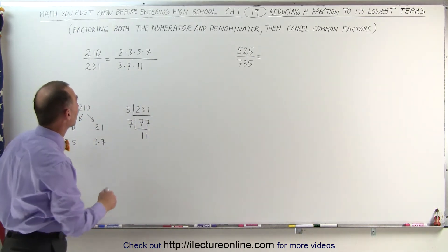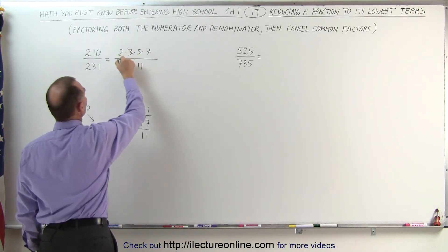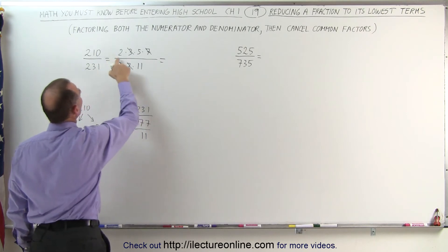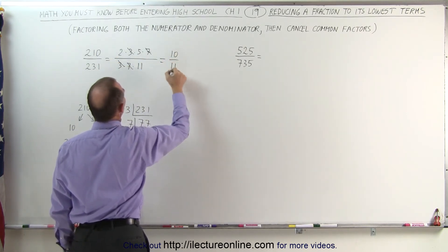Now we look for common factors. We see the number 3 is common. The number 7 is common, which means that this can be reduced to 2 times 5, which is 10, divided by 11.